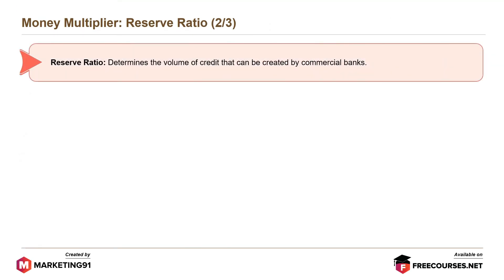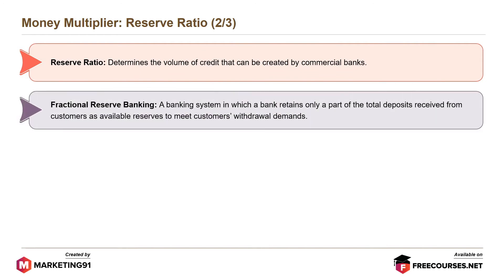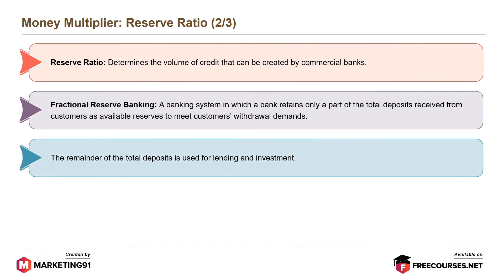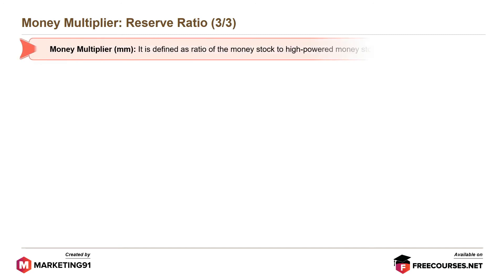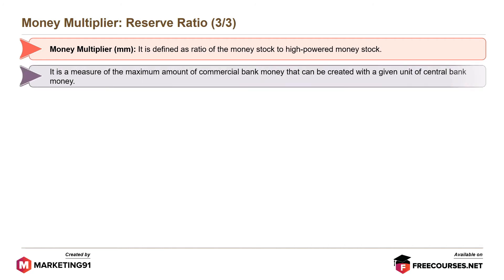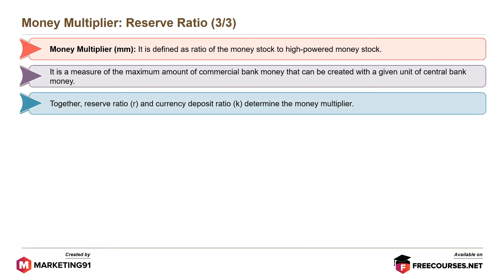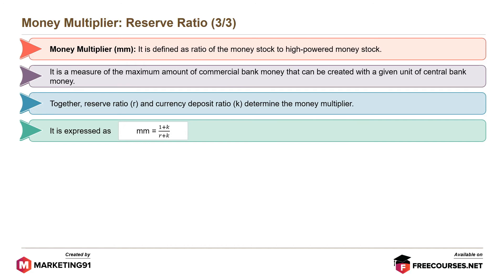Reserve ratio determines the volume of credit that can be created by commercial banks. Fractional reserve banking is a banking system in which a bank retains only a part of the total deposits received from customers as available reserves to meet customers' withdrawal demands; the remainder is used for lending and investment. Most bank-generated loans are later redeposited into different banks, creating additional credit — this is called multiple credit creation. Money multiplier MM is defined as the ratio of the money stock to high-powered money stock, and is expressed as MM equals (1 plus K) divided by (R plus K), where R is the reserve ratio and K is the currency deposit ratio.